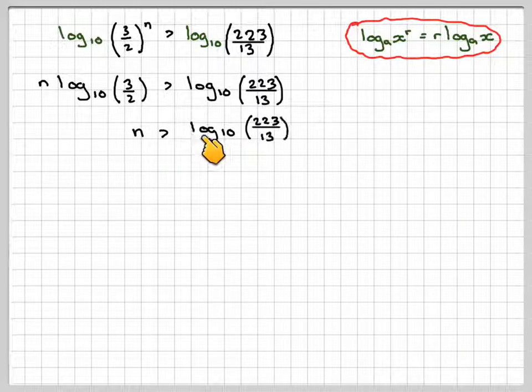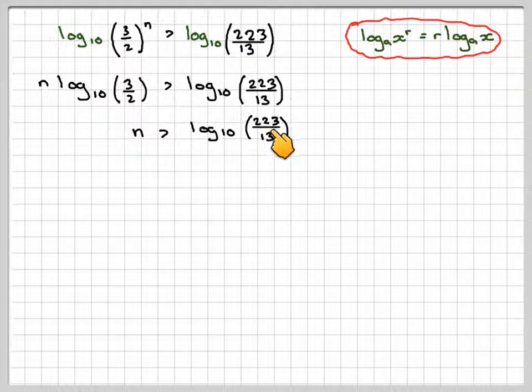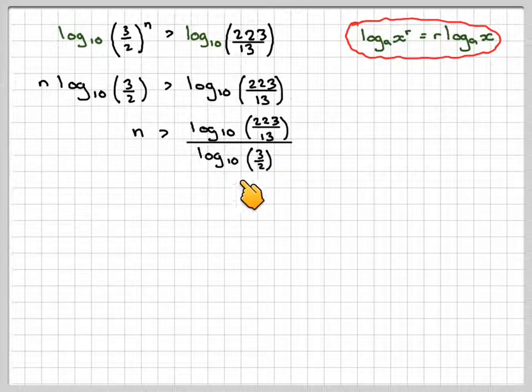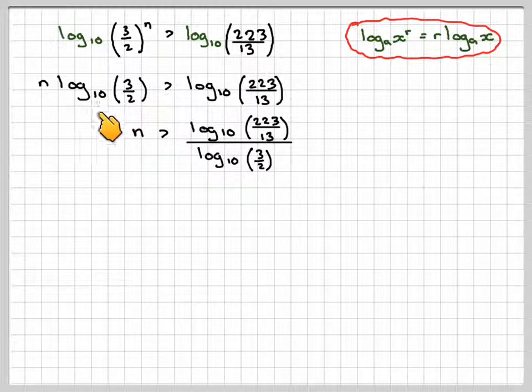So we've got that n is greater than log 10 of 223 over 13 divided by log to the base 10 of 3 over 2. Do check that we need this division here. This here is positive, because if it is, then the inequality sign would have to change.